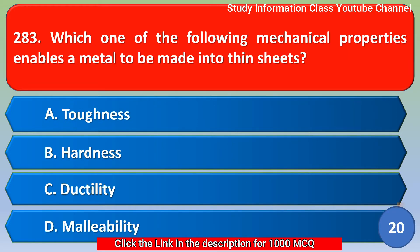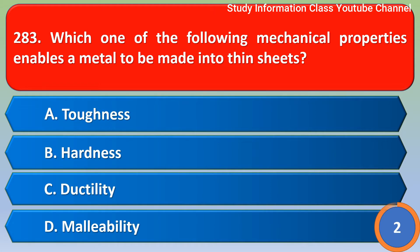Which one of the following mechanical properties enables a metal to be made into thin sheets? Option A, toughness; Option B, hardness; Option C, ductility; Option D, malleability. The right answer is Option D, malleability.